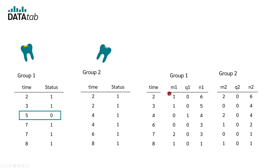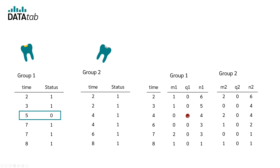Similar to the Kaplan-Meier curve, we now fill in the columns M, Q, and N for groups 1 and 2 respectively. M tells us for how many people an event has occurred at this point in time. For group 1: after 2 years, 1 filling has broken out; after 3 years, again 1 filling. At times 4 and 6, nothing happened. At time 7, 2 fillings broke out; at time 8, 1. Q tells us at which time how many cases were censored. We only have time 5 — since this time was not included, its value is assigned to the next earlier time, time 4, so a 1 stands there.